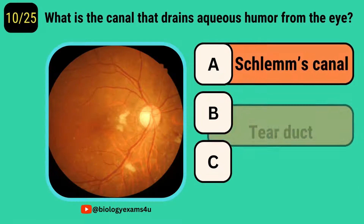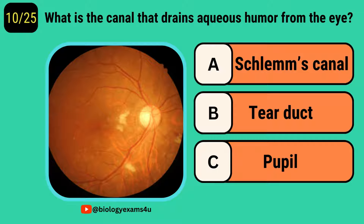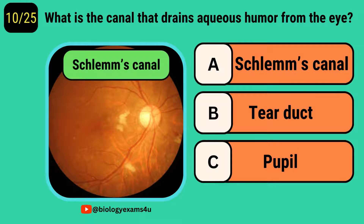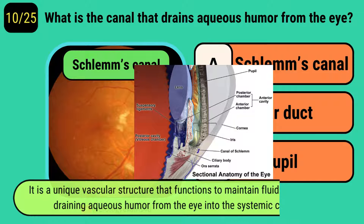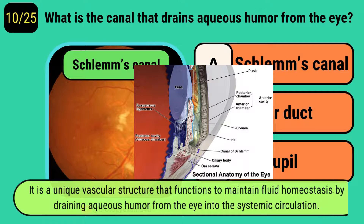What is the canal that drains aqueous humor from the eye? It is called Schlemm's canal, a unique vascular structure that functions to maintain fluid homeostasis by draining aqueous humor from the eye into systemic circulation.